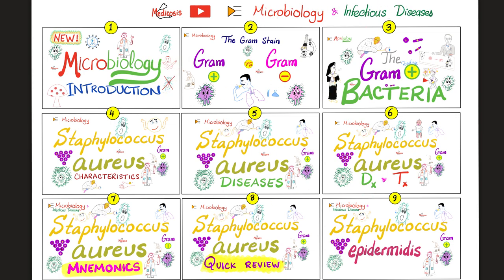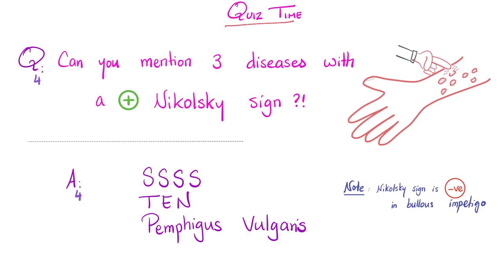Please watch these videos in order for maximum understanding and retention. Do you remember when we talked about this? Mention three diseases with a positive Nikolsky sign. The answer is Staphylococcal Scalded Skin Syndrome, Toxic Epidermal Necrolysis, and Pemphigus vulgaris — of course there are others. And do you remember when we said that in bullous impetigo the Nikolsky sign is negative? Which means that if you touch this bulla, it will not rupture.